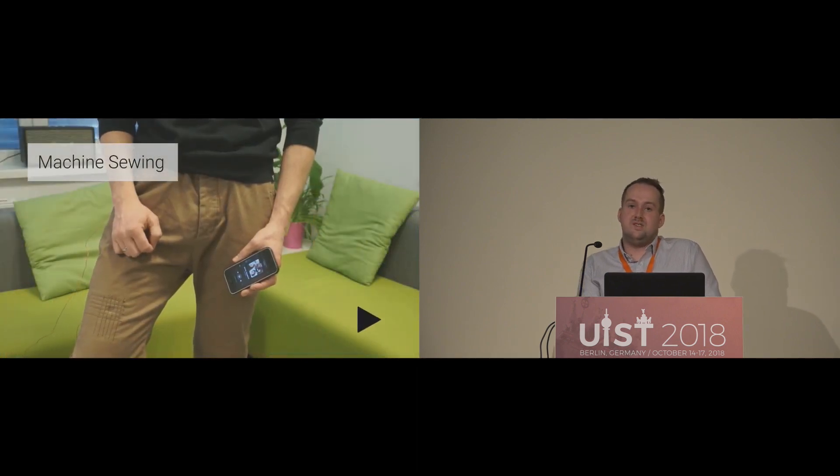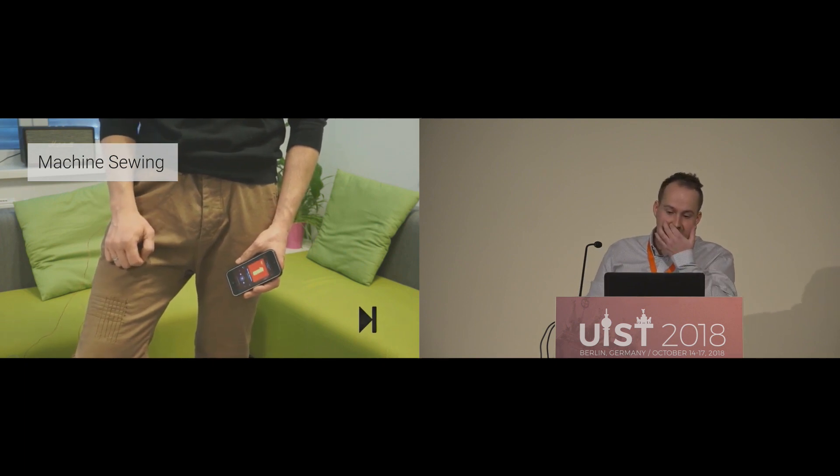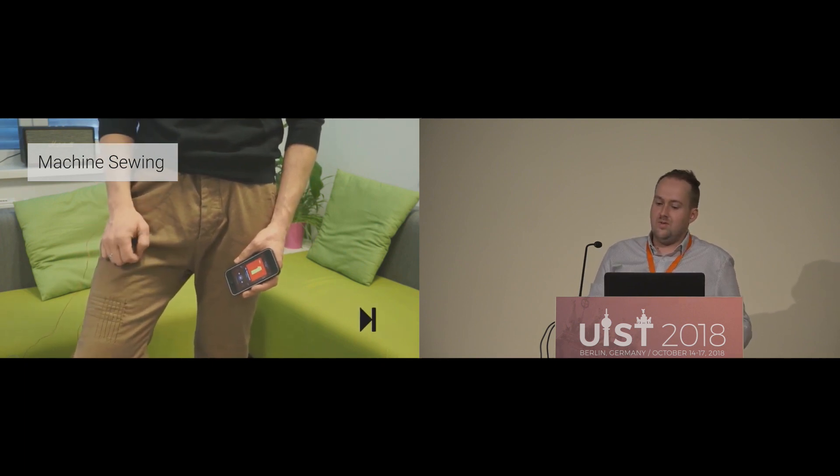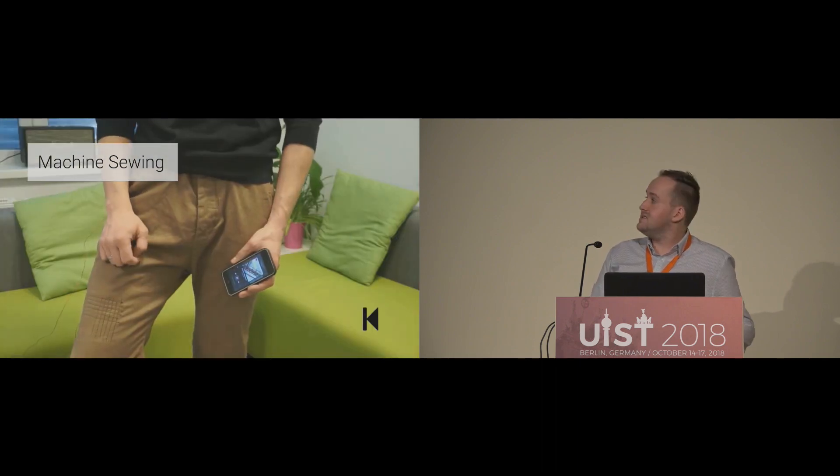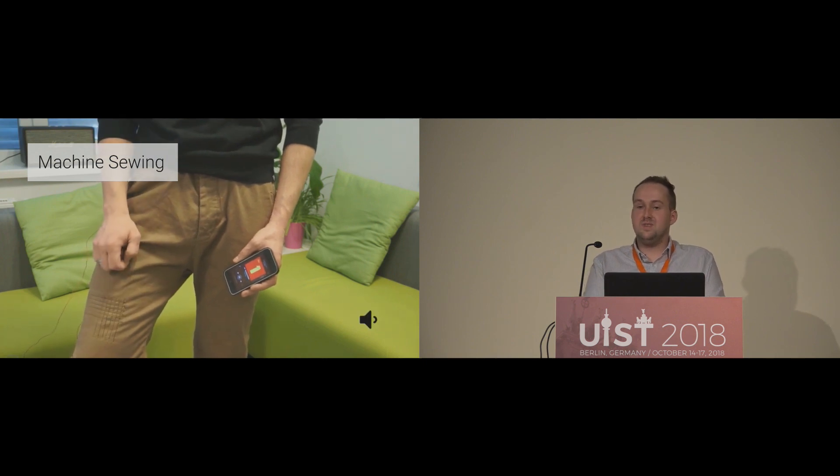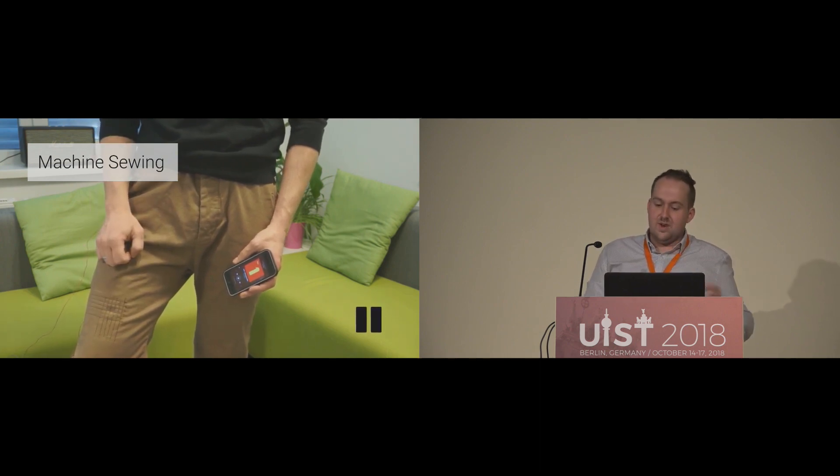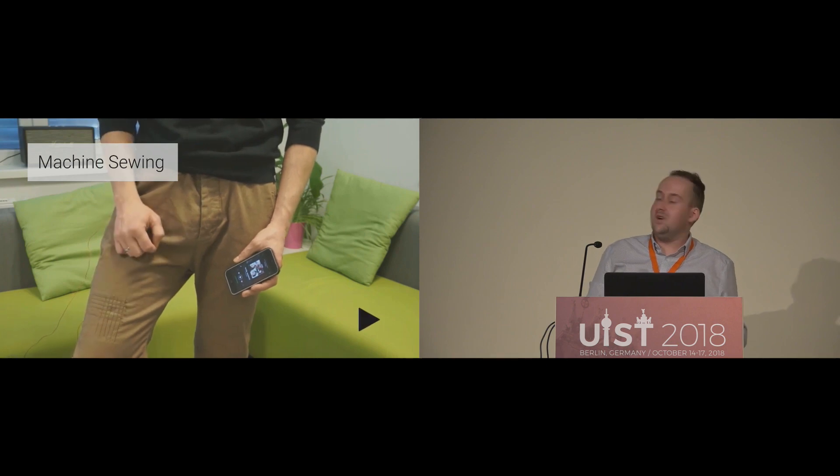For larger sensor patches, hand sewing can be impractical. Therefore, we tested the machine sewing approach, where we used an off-the-shelf sewing machine. We created a six-by-six sensor patch on a pair of pants, which enables simple slide gestures in all four directions, as well as tap gestures and double-tap gestures. With this gesture, we controlled the Spotify music player on a smartphone.